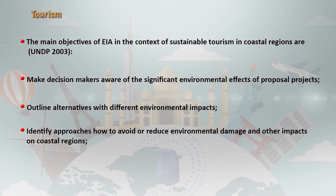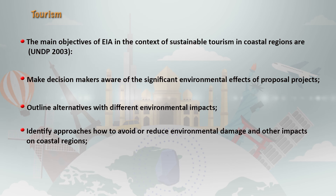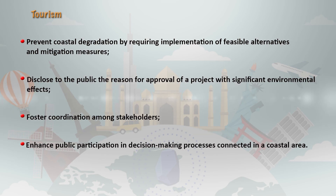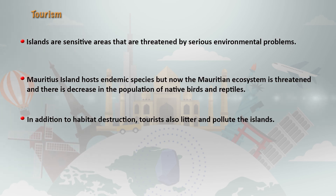The main objectives of the EIA in the context of sustainable tourism in coastal regions include making decision makers aware of the environmental effects of proposed projects, providing alternatives with different environmental impacts, mitigating and avoiding environmental damage on coastal regions, preventing coastal degradation, disclosing to the public the reasons for project approval, and fostering coordination among stakeholders while enhancing public participation in decision making. Islands are sensitive areas that can be threatened by environmental problems.